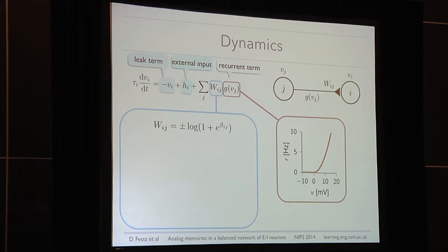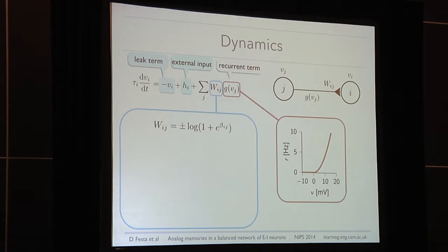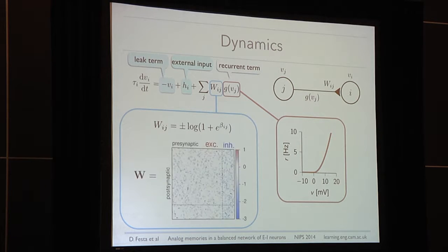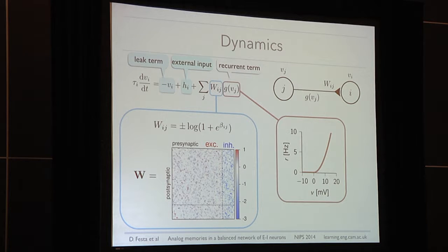Importantly, we also reparametrize the weights. This converts a constrained optimization problem on the weights into an unconstrained optimization problem on the beta parameters. It is constrained because the weights must respect Dale's law — they should express two different signs. The weight matrix is divided into one positive excitatory part and one inhibitory part corresponding to the inhibitory population.